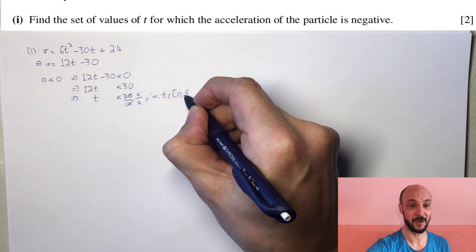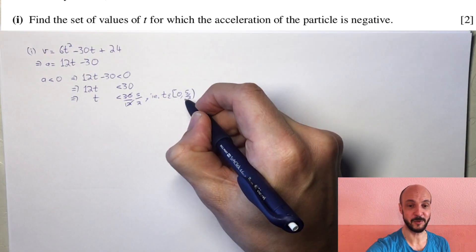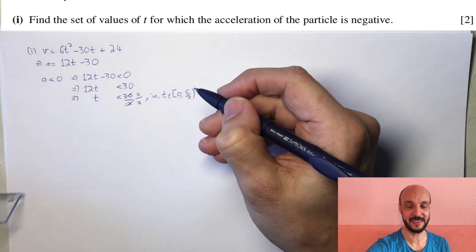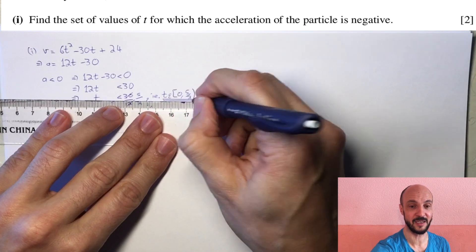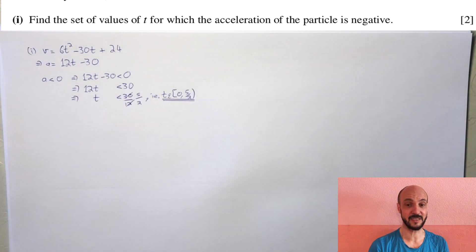For the second part, find the distance between the two positions at which P is at instantaneous rest. We need a distance equation from our velocity equation so we're going to integrate.